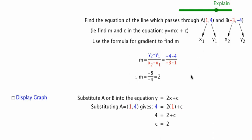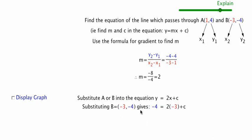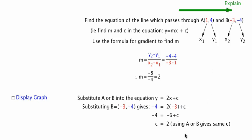If we had chosen point B to substitute in instead, we would be substituting its x and y coordinates. Multiplying out on the right-hand side gives negative 6. Solving for c — adding negative 6 to both sides — we again get c equals 2. So it doesn't matter which point we substitute in; we'll get the same solution for c.